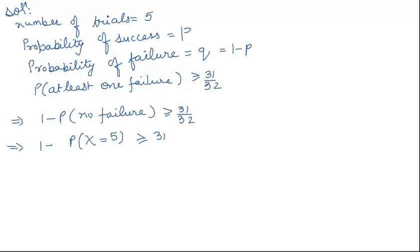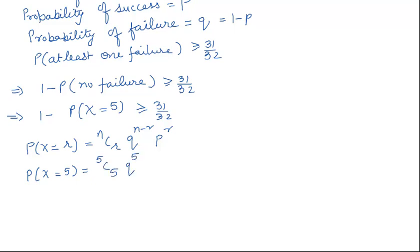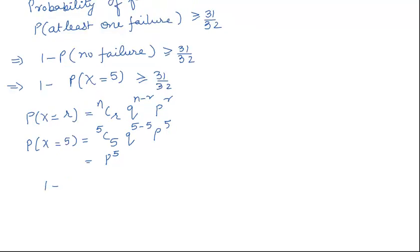In binomial probability, P(X = r) equals nCr times q^(n-r) times p^r. From the present scenario, P(X = 5) equals 5C5 times q^(5-5) times p^5, which gives us p^5, since 5C5 is 1 and q^0 is 1. Therefore, we can say that 1 minus p^5 is greater than or equal to 31 over 32.